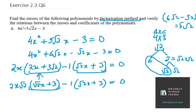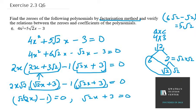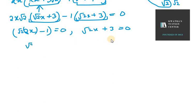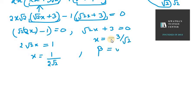Now the two factors are: under root 2 times 2x minus 1 equals 0, and under root 2x plus 3 equals 0. From the first factor, under root 2 times x equals 1 over 2 under root 2, so this is alpha. From the second factor, x equals minus 3 over under root 2, so beta is minus 3 over under root 2, and alpha is 1 over 2 under root 2.